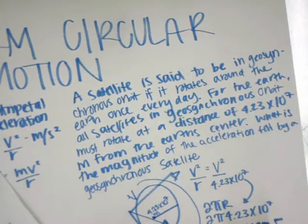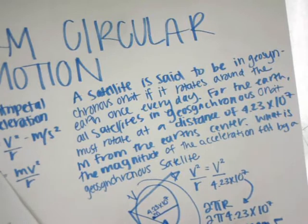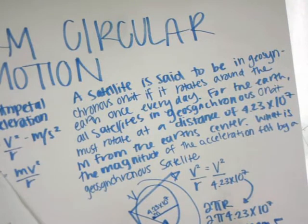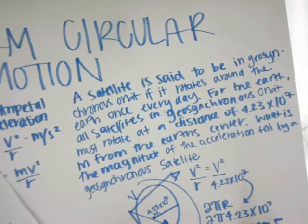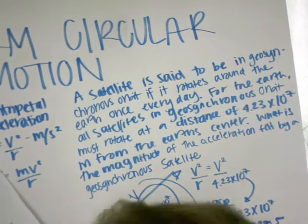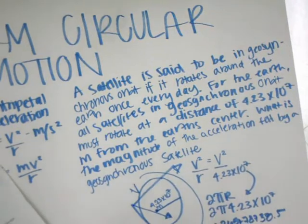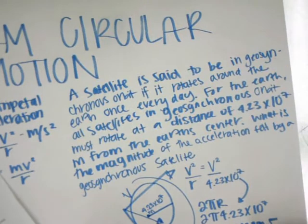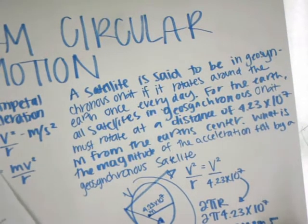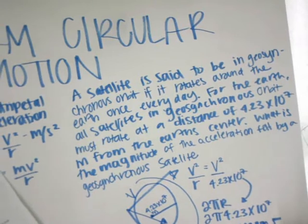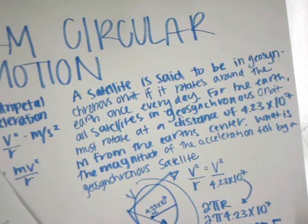So our ending result: velocity equals 30,761.42802 meters per second. Then we divide V squared by the radius and find that the centripetal acceleration comes to about 22.37.